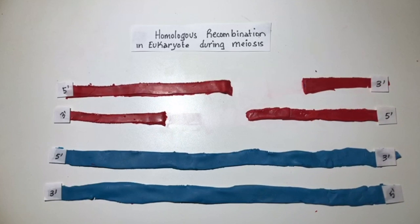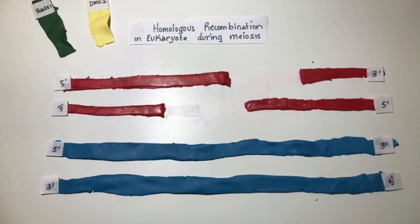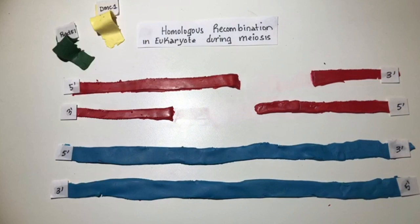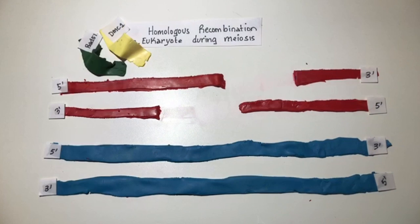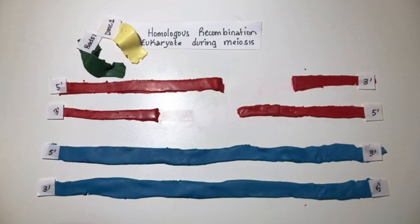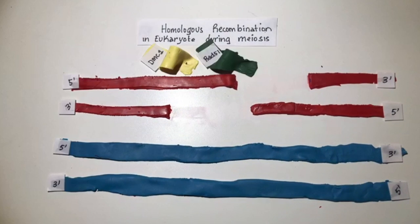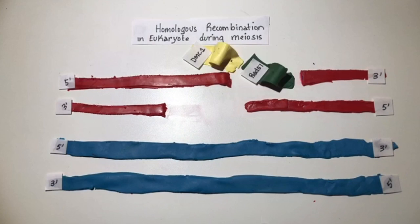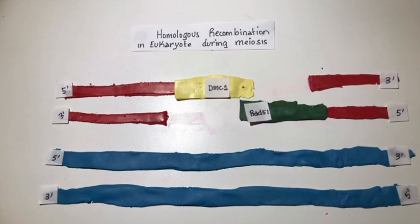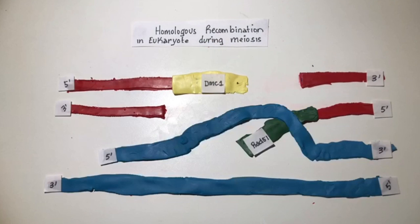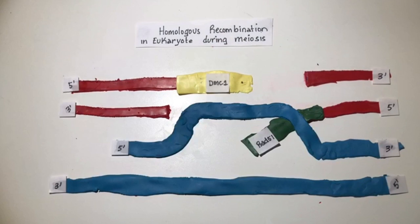Then, the strand exchange proteins DMC1 and RAD51 come in and assemble on the single-stranded DNA tails. RAD51 and DMC1 function to create a process called strand invasion. The two proteins interact with the single-stranded DNA to form specialized filaments of nucleic acid and proteins that are adapted for facilitating the recombination process.